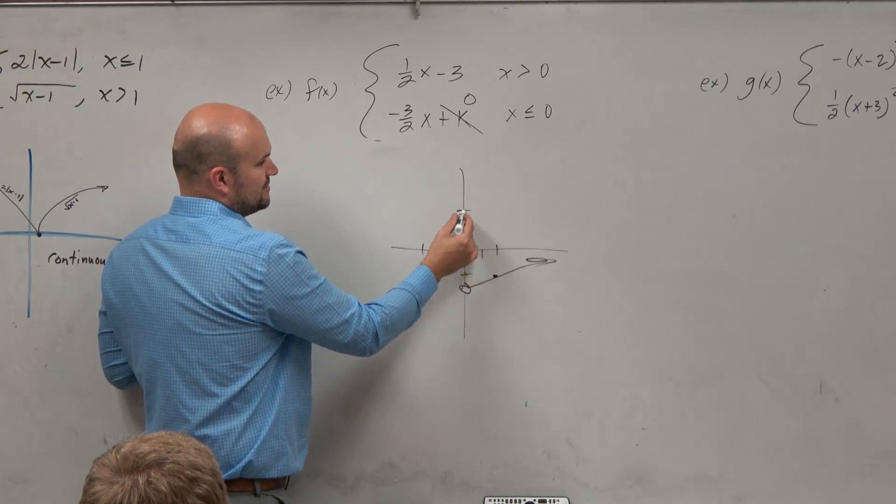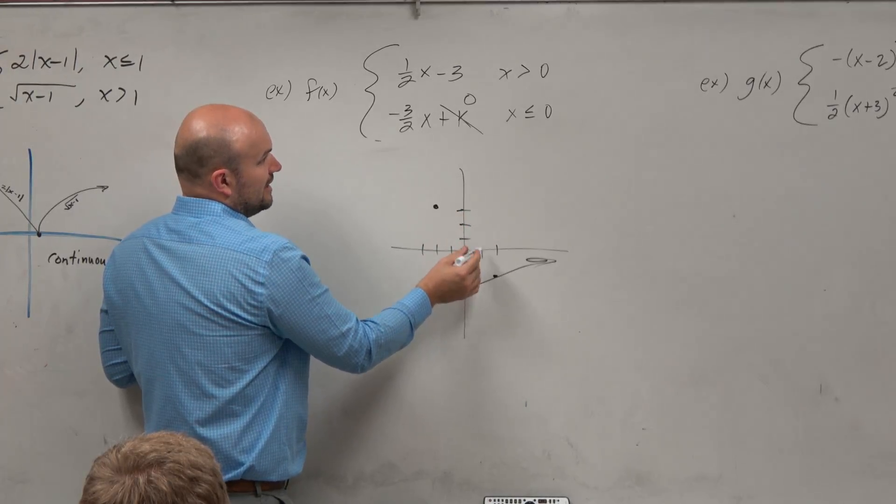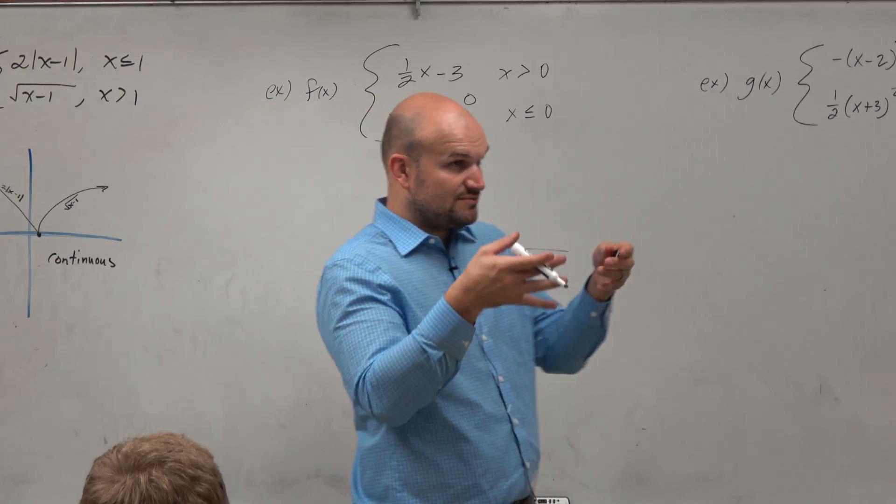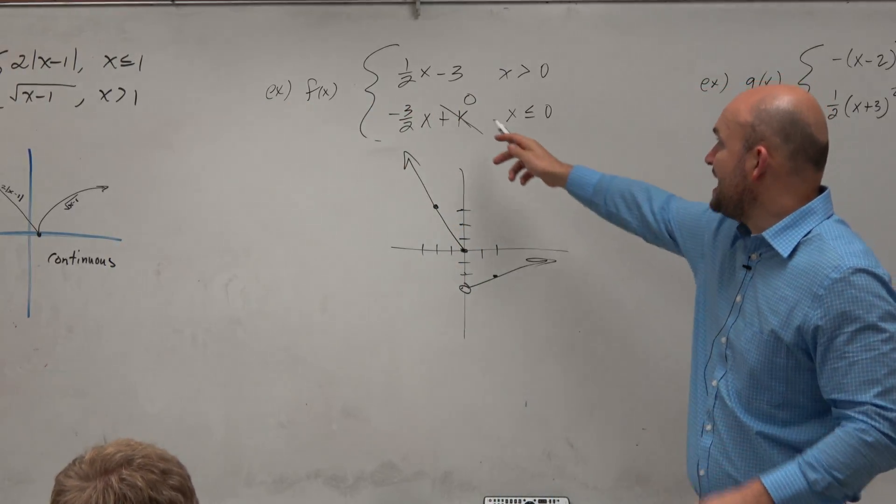So I could go up 3, 1, 2, 3, down over 2. And it's going to be less than or equal to 0. So if you look at these, right now, if k is 0, the function is not continuous, right?